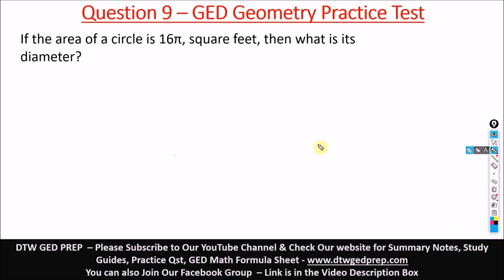So we have question nine of the GED geometry practice. It says if the area of a circle is 16π square feet, you can see this now put in π, this question is not telling us to put π as equal to 3.14.